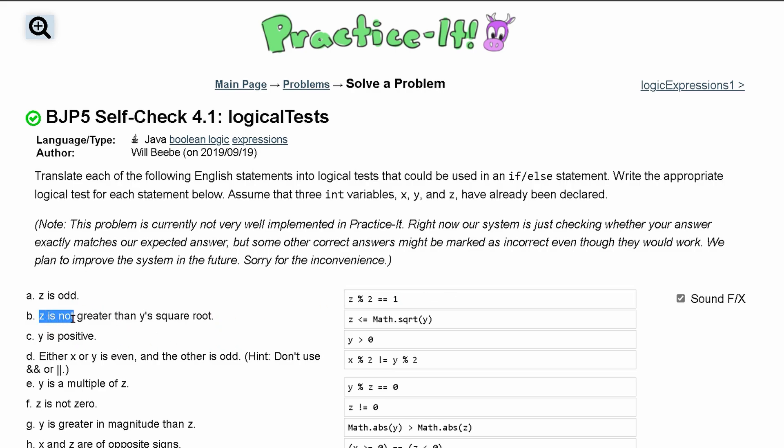Next, we have z is not greater than y's square root. Well, we can use a comparison operator for this. So z, just by itself, is not greater than. If it's not greater than, well, that means it has to be less than or equal to. So we have our less than or equal to sign, and then this is our y's square root. So we have to do our math.sqrt and pass in a y inside of here.